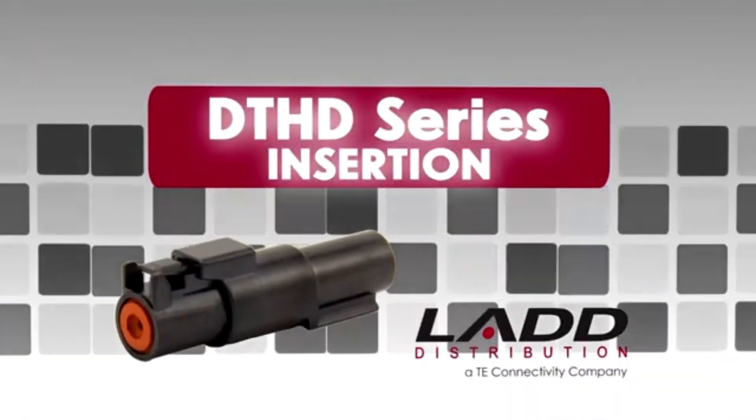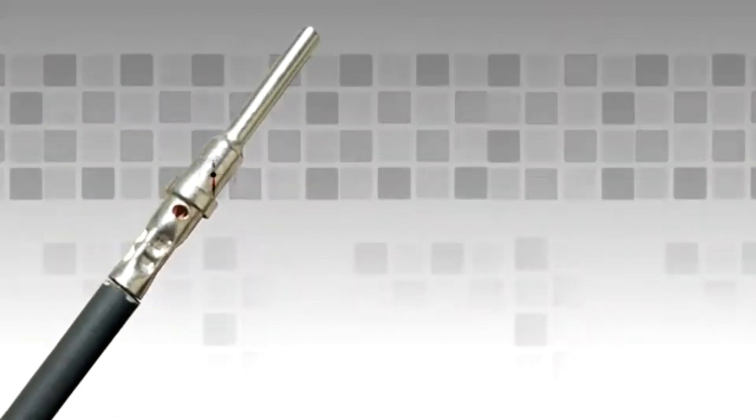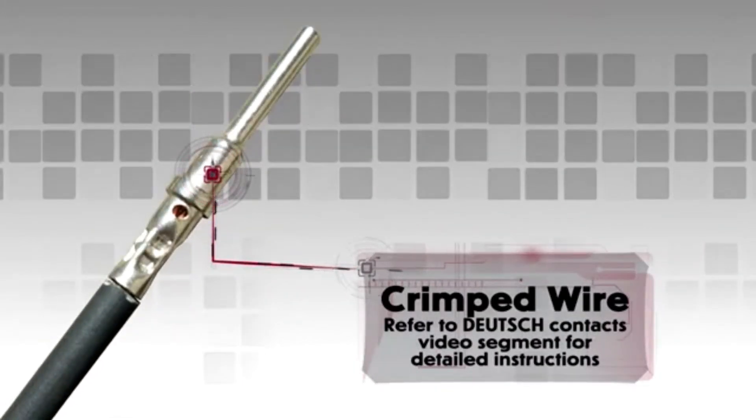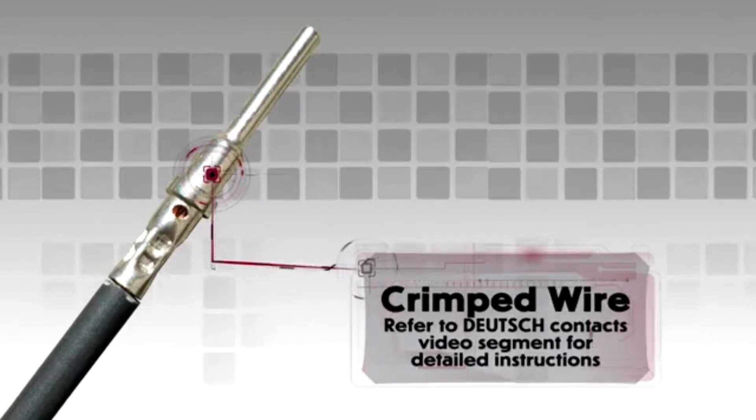DTHD Insertion. Begin with a crimped wire. For assistance, refer to the Deutschkontakt video segment for detailed instructions.